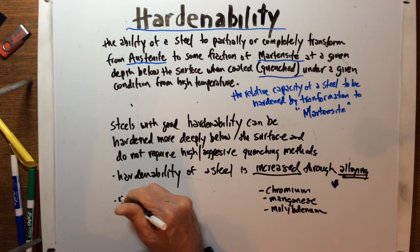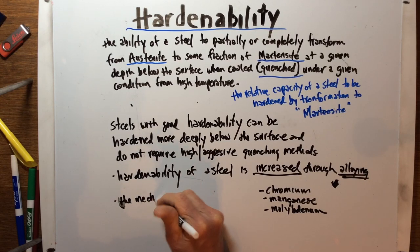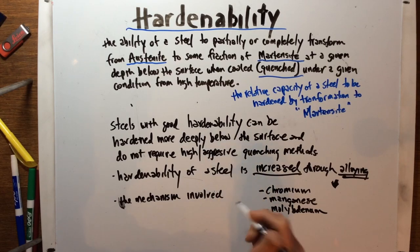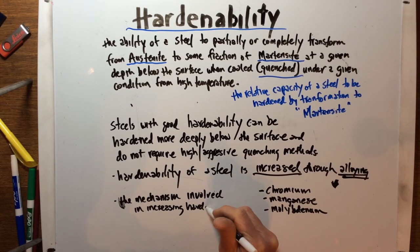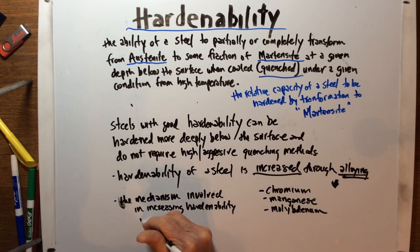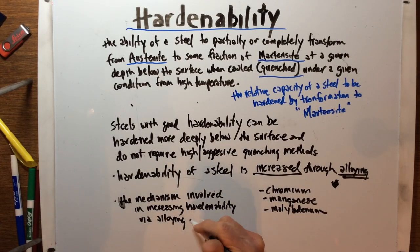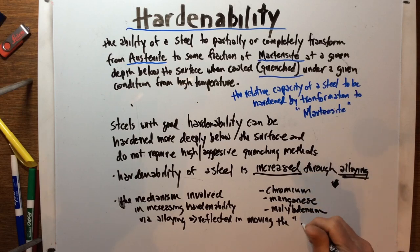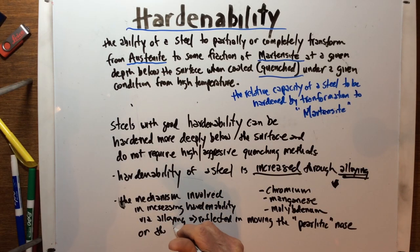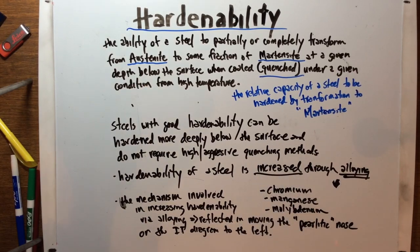The mechanism involved in increasing hardenability through alloying is reflected in moving what we called the pearlitic nose on the IT diagram to the right. That's the net result of adding those alloying elements.